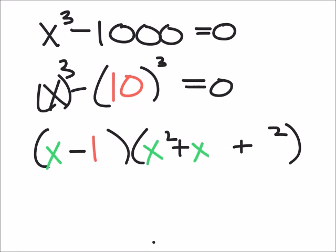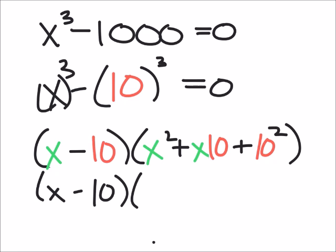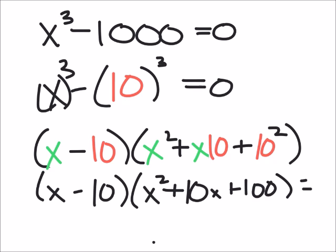I made that red, so we'll just make that red. Then we can evaluate from here. So x minus 10 times x squared plus 10x plus 100. And of course this all equals zero, right?